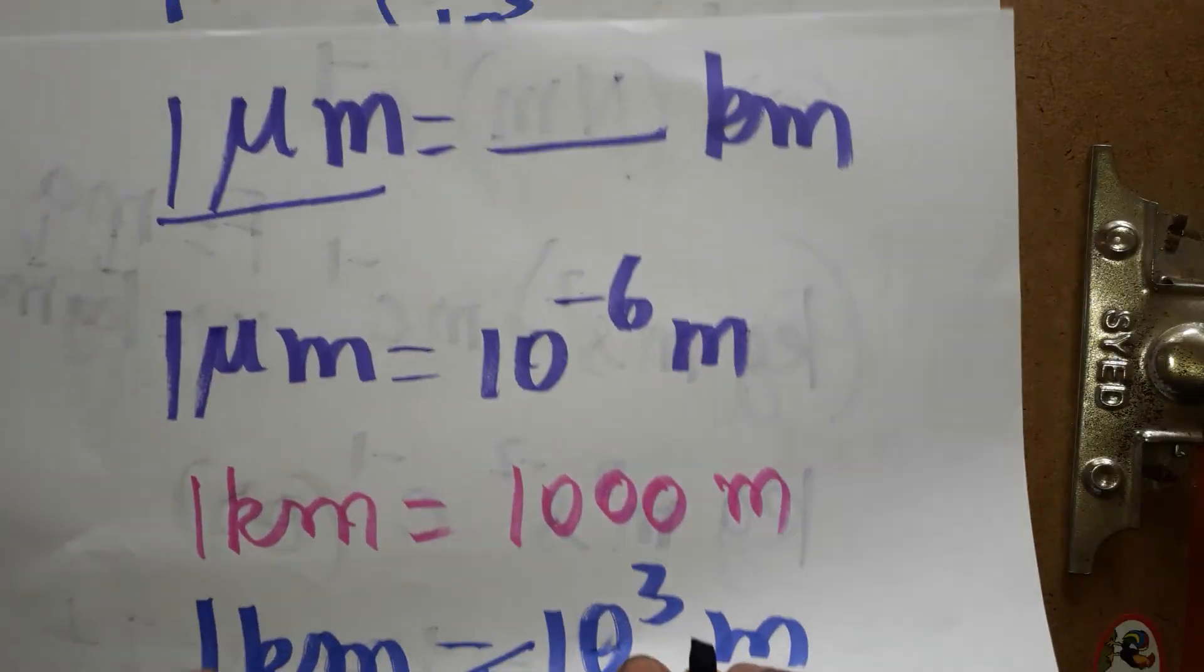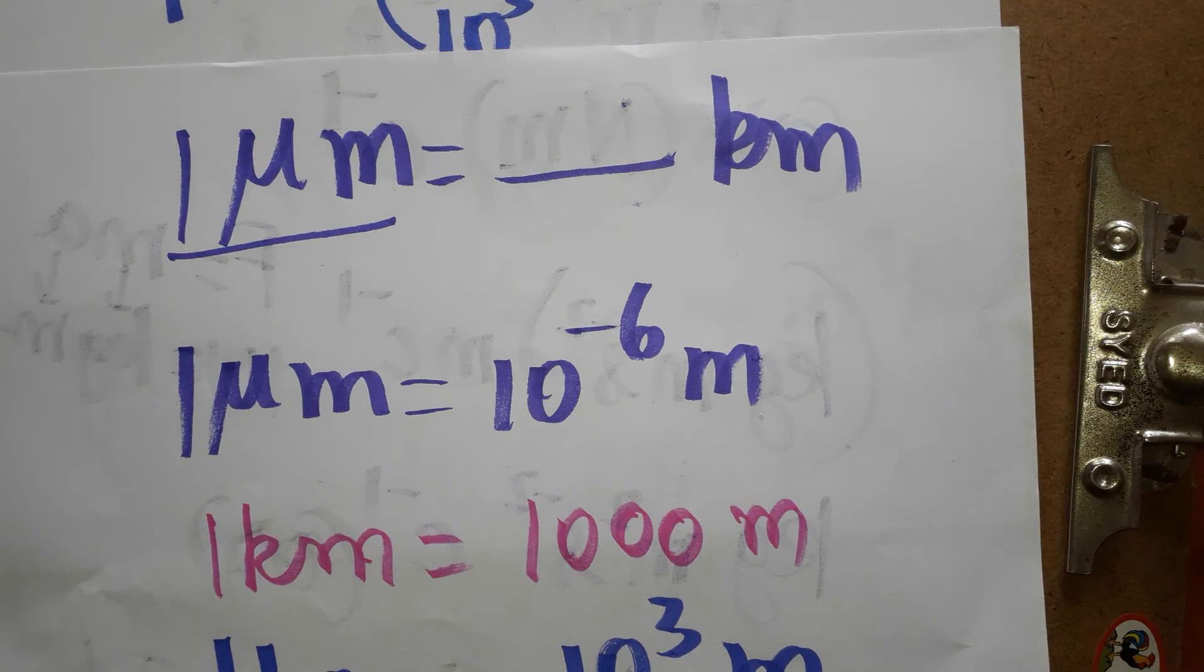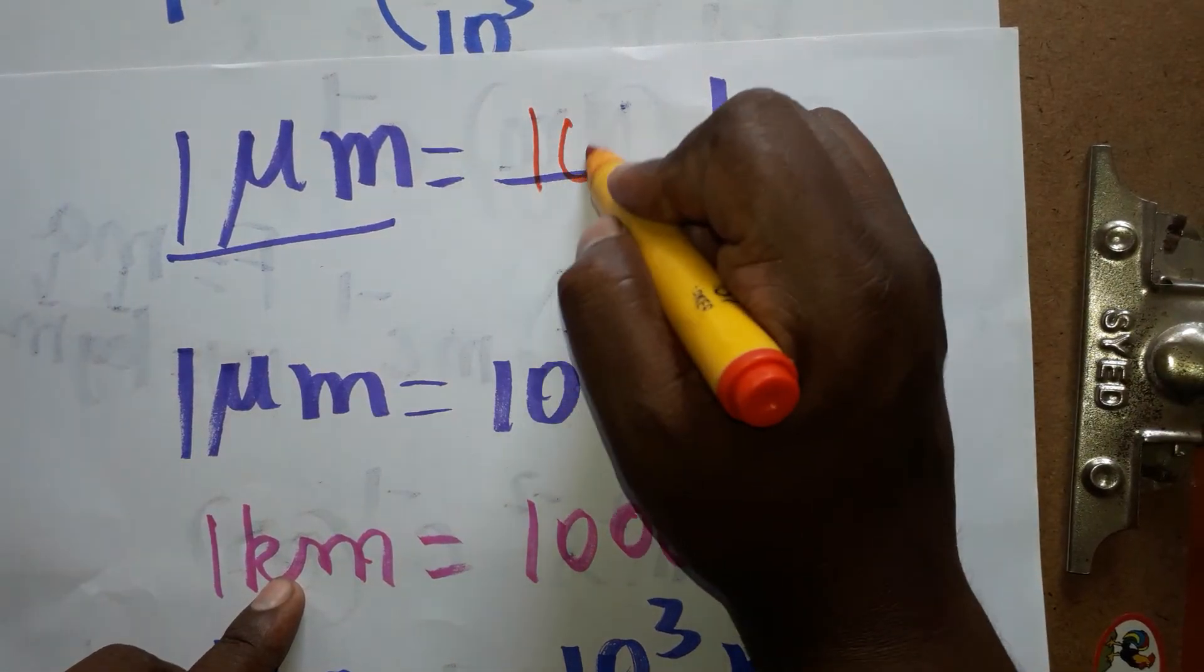So micrometer to kilometer is 10 power minus 9 kilometer. Thank you for watching my channel. If you like my channel, please subscribe.